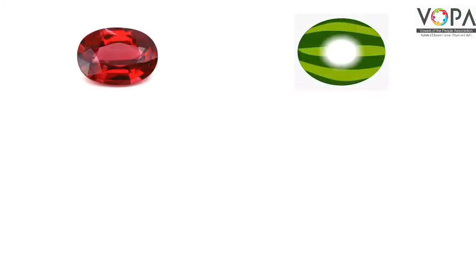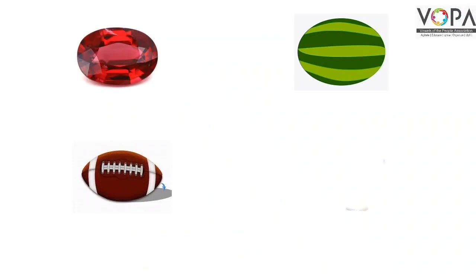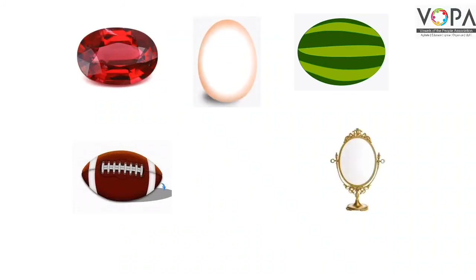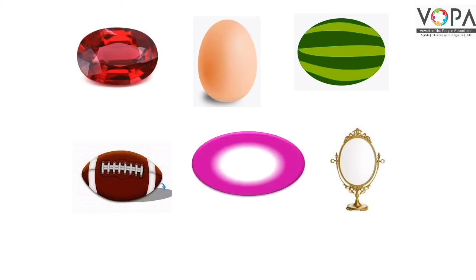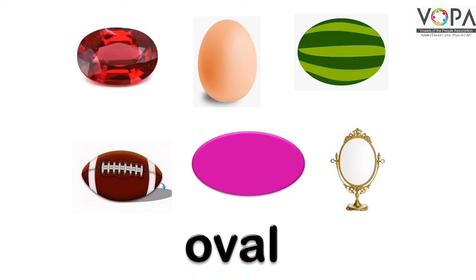इन शकलों पर गौर कीजिए बच्चों। ये सारी shapes oval की तरह हैं। किस तरह हैं बच्चों? Oval की तरह हैं। तो ये सारी shapes कौन सी हुईं? Oval।